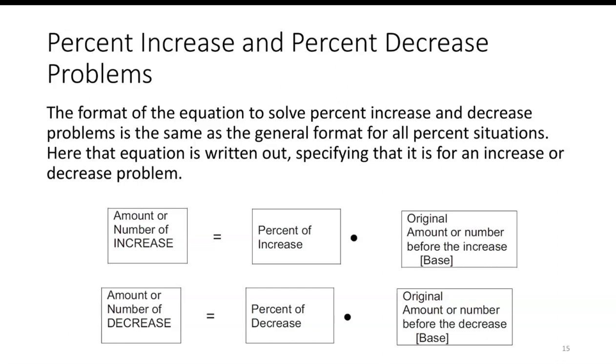So we have the amount or number of increase is equal to the percent of increase times the original amount or the number before the increase, which is the base. The amount or number of decrease is the percent of decrease times the original amount or the number before the decrease.